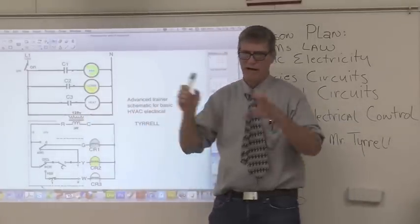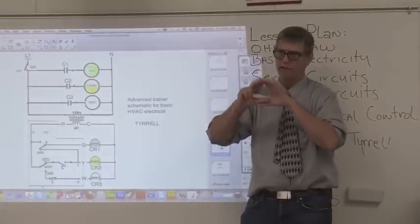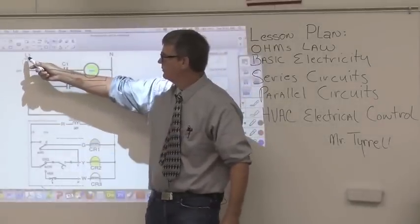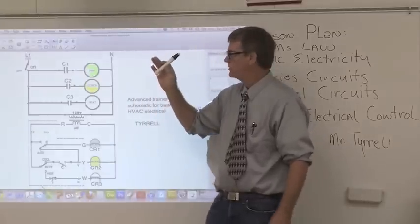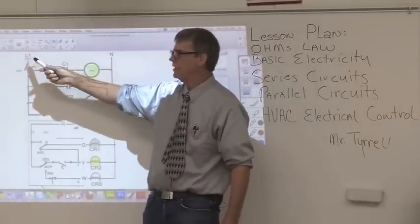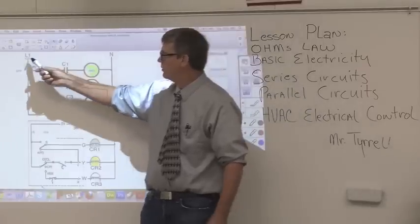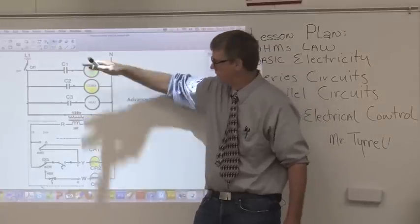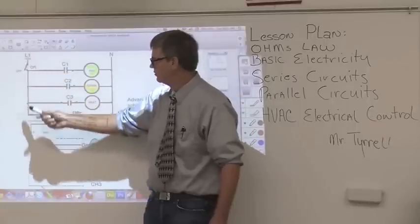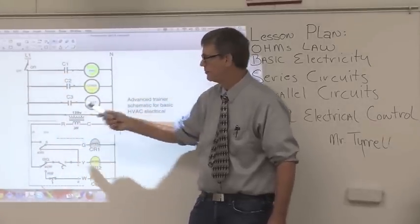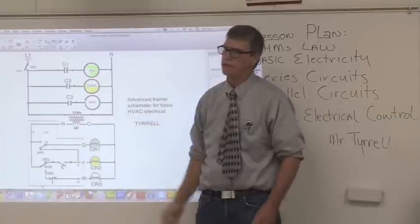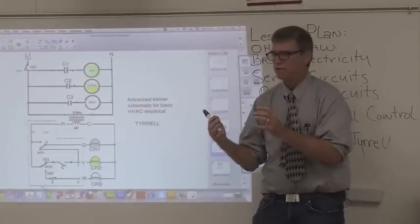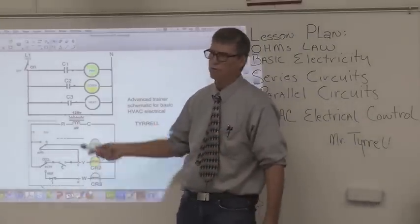What's another name for the high voltage side of the transformer? The primary side. So we're going to take 120 volts — picture this coming all the way from the circuit breaker panel. We're going to take 120 volts from L1 and neutral and run it through a switch to make sure that the power is either on or off for this whole circuit.